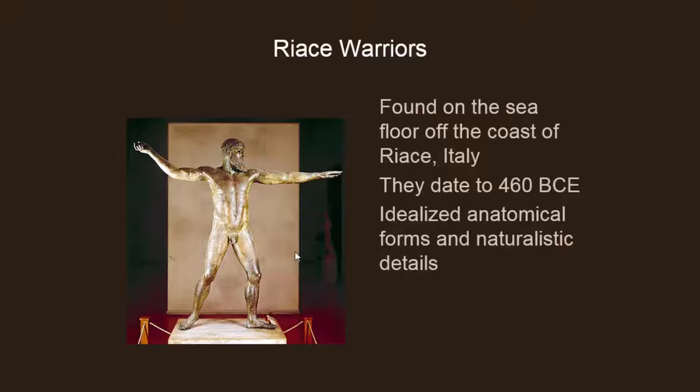These bronze warriors were found on the sea floor off the coast of Riace in Italy and date to about 460. Bronze warriors are somewhat of an anomaly because bronze might be taken and melted down to make other sculptures or weapons, so it's hit and miss how many bronze warriors there actually were. But this clearly belongs to the classical period — you can see the articulation and emphasis, and they've got a date of 460.